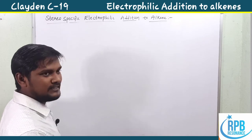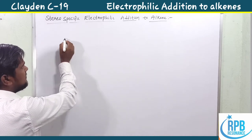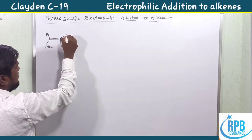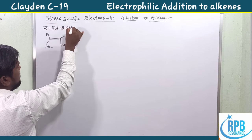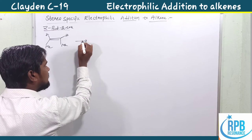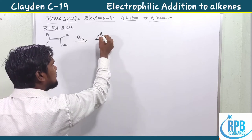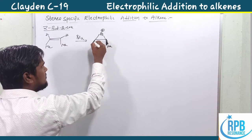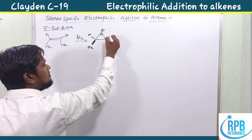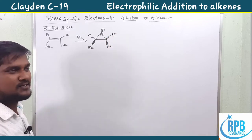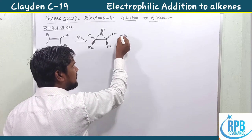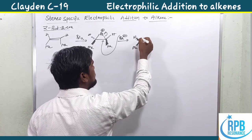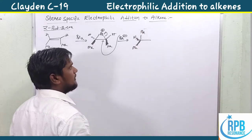Let's move to simple aliphatic compounds. Here is methyl-methyl with hydrogens - this is Z-but-2-ene, simply called cis-butene. When you add Br2, it forms a bromonium ion intermediate. If both methyl groups are above the plane, hydrogens are automatically below the plane. After bromonium ion formation, our nucleophile can attach at the bottom of the plane.